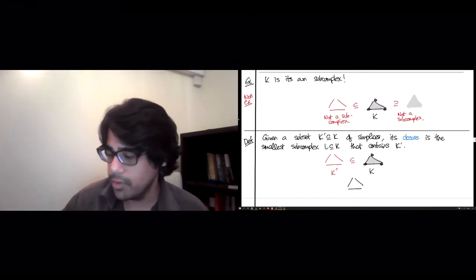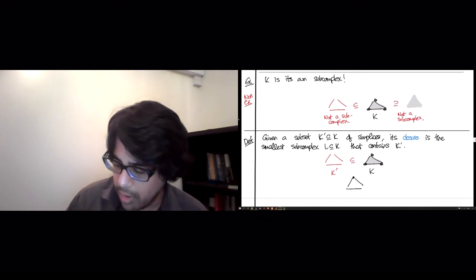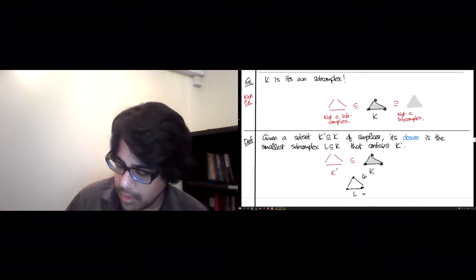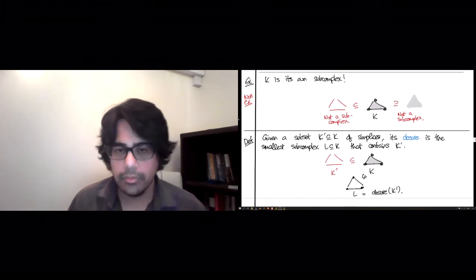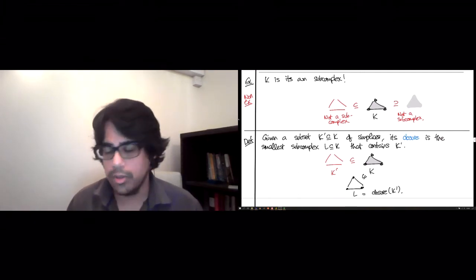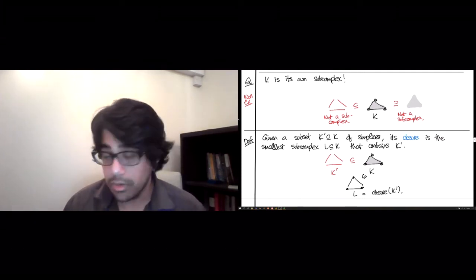And the minute you have those three edges, you're forced to include all the boundary vertices. So this L, which is an honest subcomplex, this is the closure of K prime. So just throw in all the smaller simplices and you're in good shape.